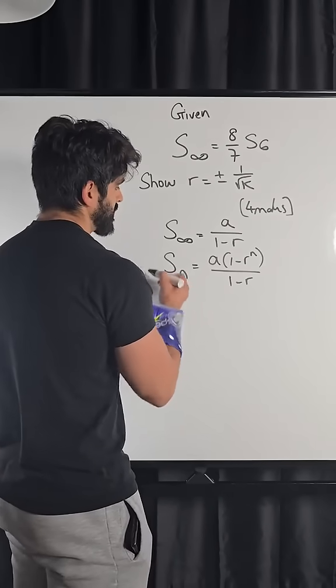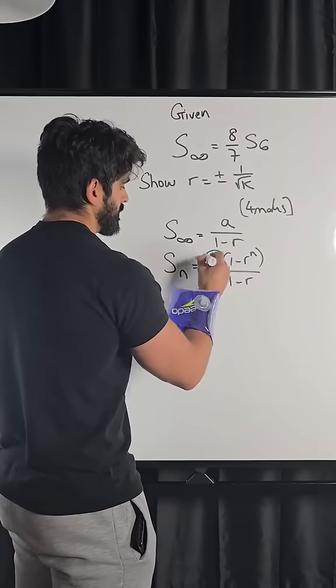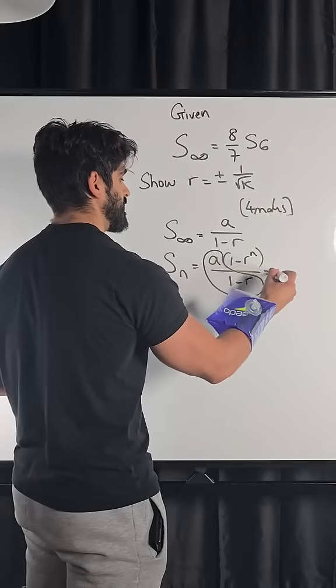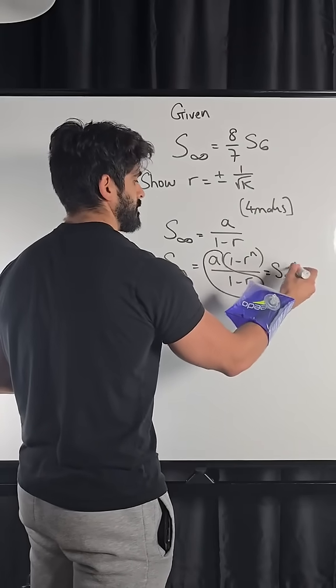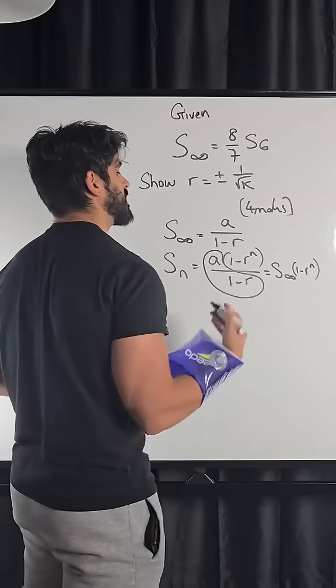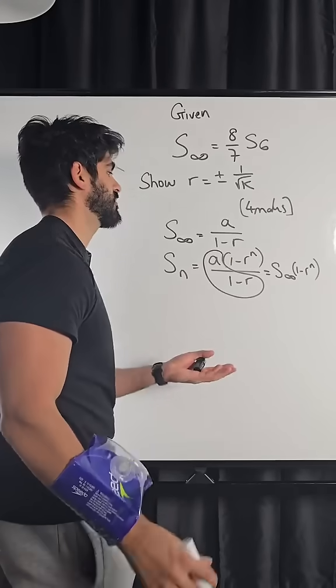Within all the sum formulas, they have sum to infinity in them. And by thinking of it like this, the sum to infinity just cancels, okay?